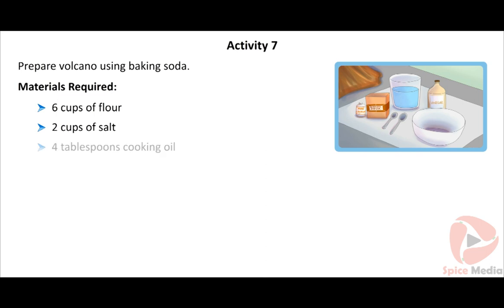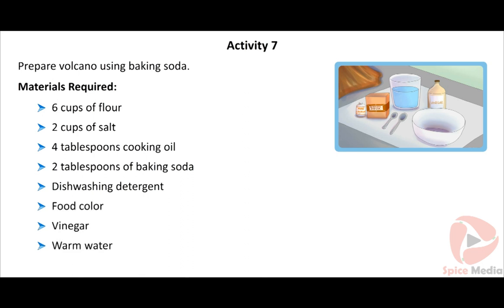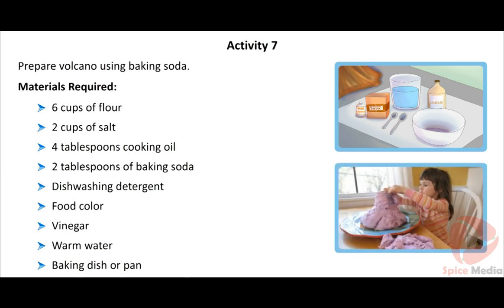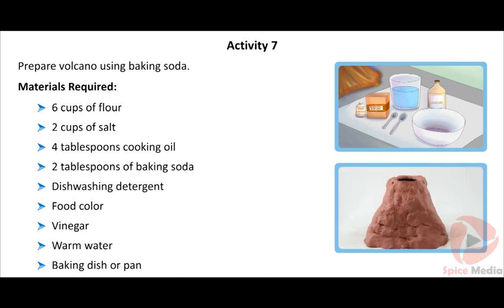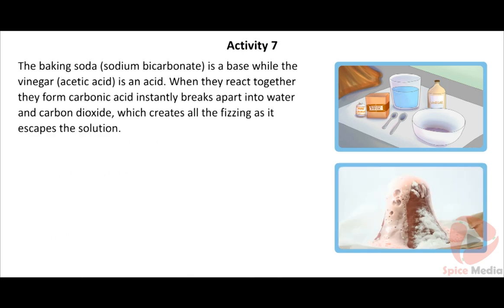Activity 7: Prepare a volcano using baking soda. Materials required: 6 cups of flour, 2 cups of salt, 4 tablespoons cooking oil, 2 tablespoons of baking soda, dishwashing detergent, food colour, vinegar, warm water, and a baking dish or pan. Procedure: Mix 6 cups flour, 2 cups salt, 4 tablespoons cooking oil, and 2 cups warm water. Mould the dough around a soda bottle into a volcano shape. Fill the bottle with warm water and red food colour. Add 6 drops of detergent, 2 tablespoons of baking soda, then slowly pour vinegar into the bottle and watch the eruption. Baking soda (sodium bicarbonate) is a base and vinegar (acetic acid) is an acid. They react to form carbonic acid, which is unstable and instantly breaks apart into water and carbon dioxide, creating fizzing.